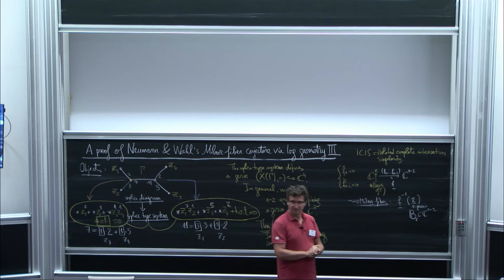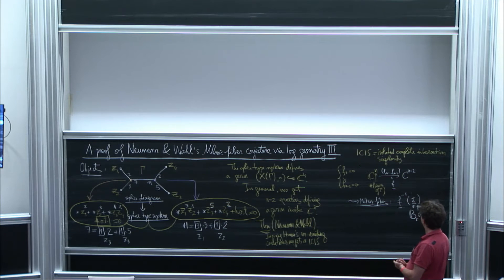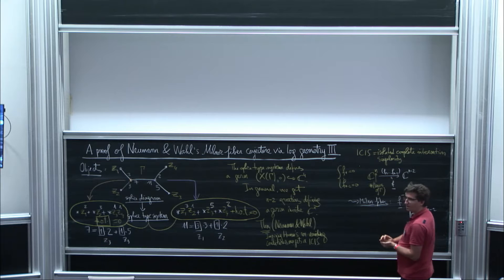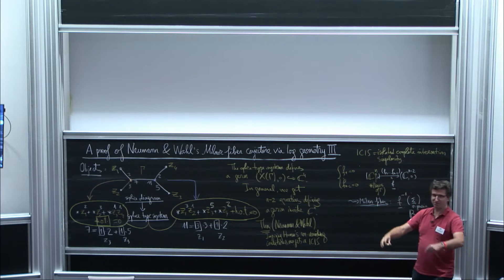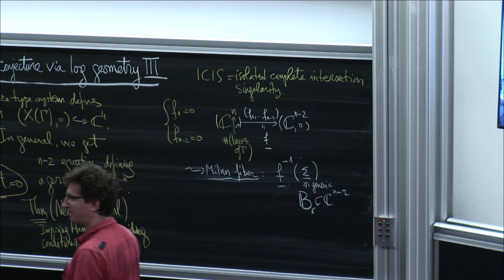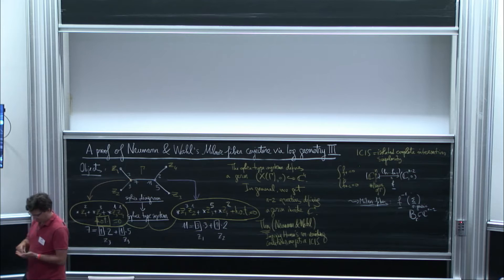Question: You wrote C^n — do you really take the whole C^n for the Milner fiber, globally? No, it's exactly like in the usual story — you have to choose balls, etc. It's just the usual thing. So why did they ask this question? Because in 1990, Neumann and Wahl conjectured something about normal surface singularities.